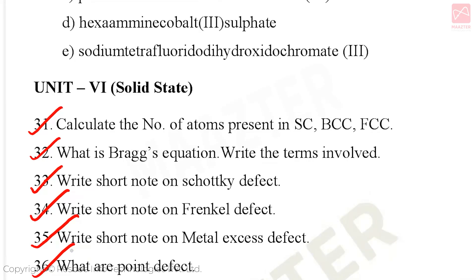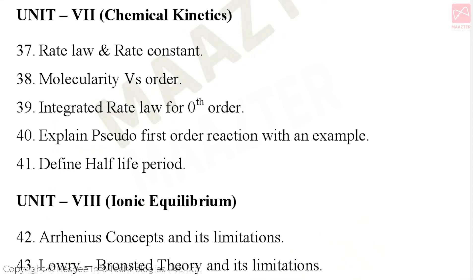Unit 7: Chemical Kinetics. Important questions: write rate law and rate constant, difference between molecularity and order of reaction, integrated rate law for zeroth order reaction, explain pseudo first order reaction with an example, and half-life period definition. These are the 5 important 2-mark and 3-mark questions in Unit 7. Also, Arrhenius equation and its terms.